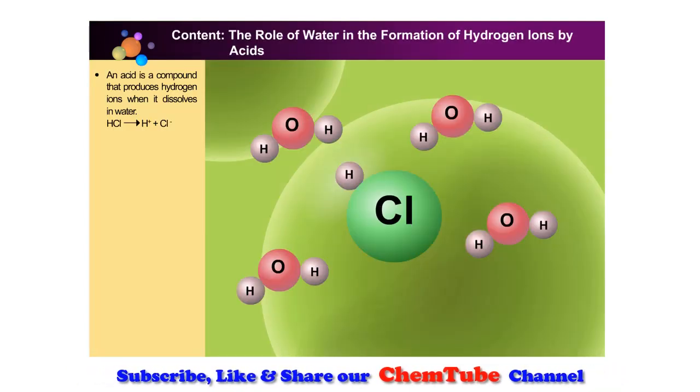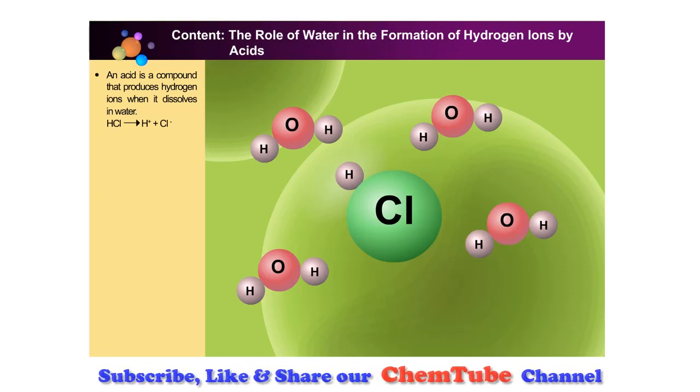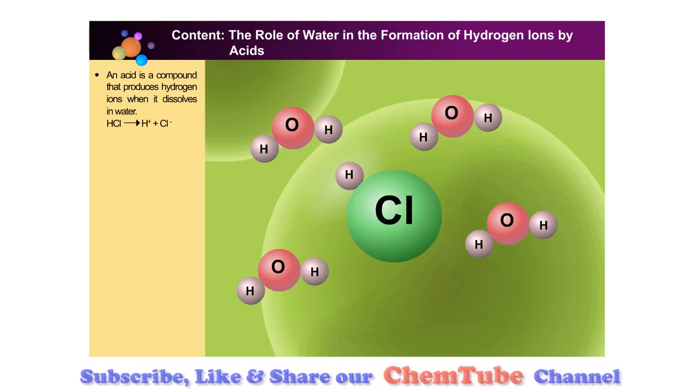According to the Arrhenius theory, an acid is a compound that produces hydrogen ions when it dissolves in water.